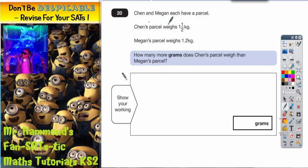Question 20 says Chen and Megan each have a parcel. Chen's parcel weighs 1.5 kilograms. Megan's parcel weighs 1.2 kilograms. How many more grams does Chen's parcel weigh than Megan's? First thing to notice here is that these are both in kilograms, and actually the question is asking for grams. So we've got to change these into grams first.